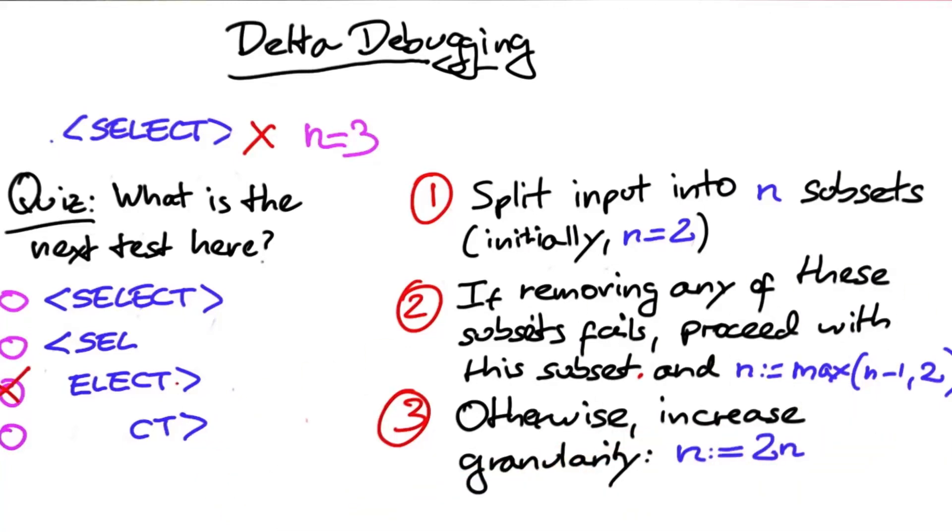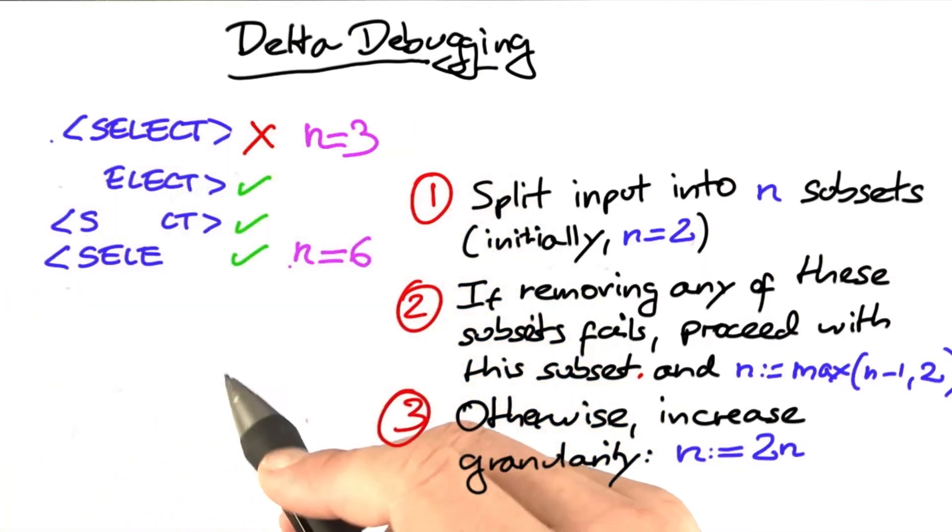Removing any of these subsets will result in a passing test, which means that we again have to increase the granularity by doubling n in here.